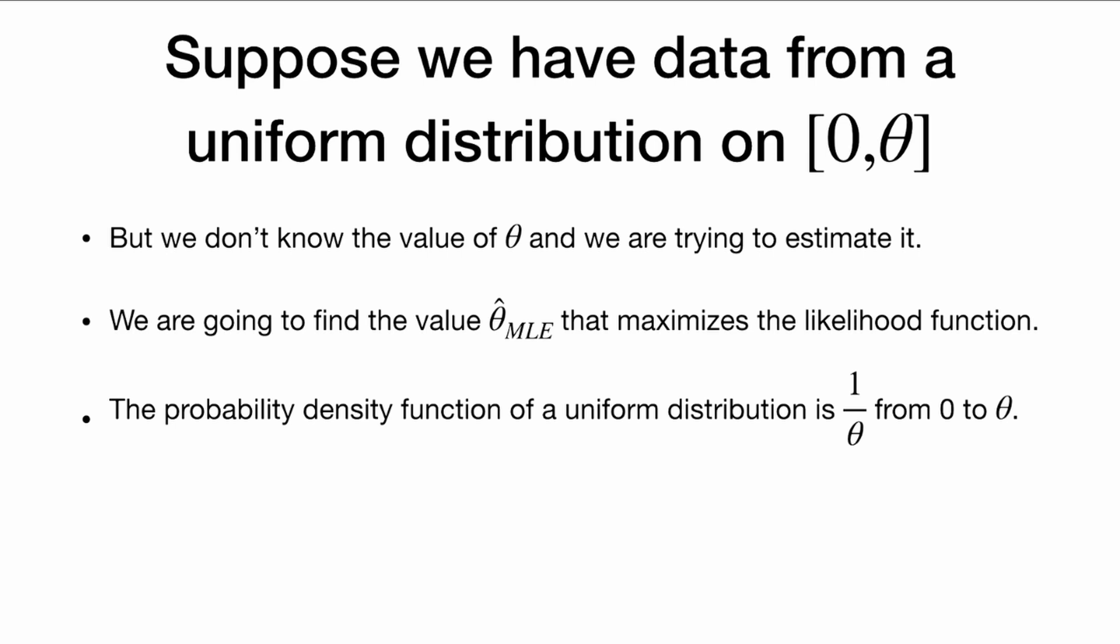The probability density function of a uniform distribution is 1/θ from 0 to θ. This is just a drawing of the probability density function for a uniform distribution. It is the same height everywhere.